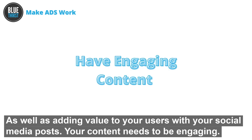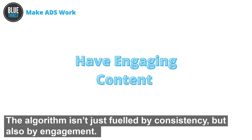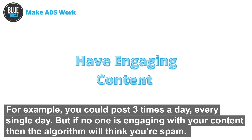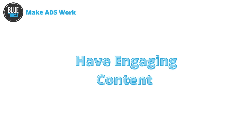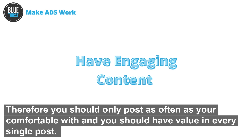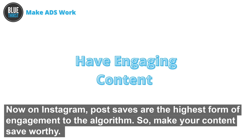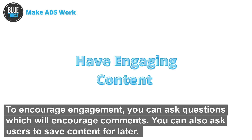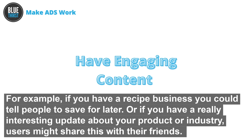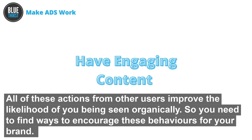Have engaging content. As well as adding value with your social media posts, your content needs to be engaging. The algorithm isn't just fuelled by consistency, but also by engagement. You can post three times a day every single day, but if no one is engaging with your content, the algorithm will think it's spam. You only need to post as often as you're comfortable, and you should be able to put value into every single post. Post engagement can be anything from a like to a post save. On Instagram, post saves are the highest form of engagement to the algorithm, so make your content save-worthy. To encourage engagement, ask questions to encourage comments, ask users to save content for later, or share something interesting about your product or industry that users might share with their friends. All of these actions improve the likelihood that you'll be seen organically.